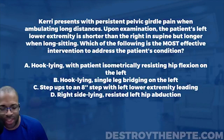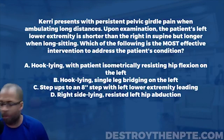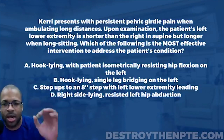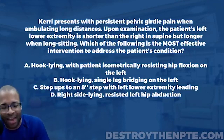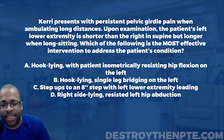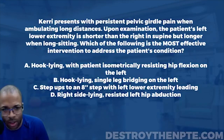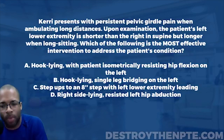For this week's Challenge Wednesday, we have our patient Carrie. Carrie presents with persistent pelvic girdle pain when ambulating long distances. Upon examination, the patient's left lower extremity is shorter than the right in supine, but longer when long sitting. Which of the following is the most effective intervention to address the patient's condition?